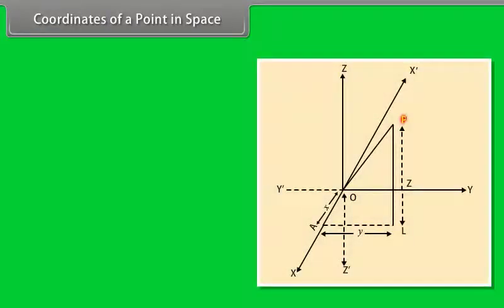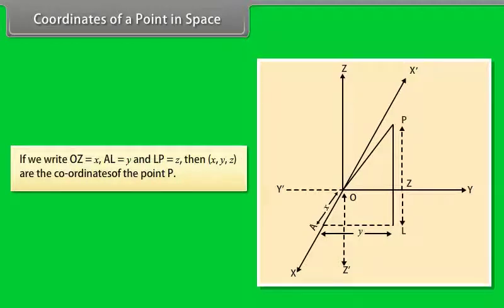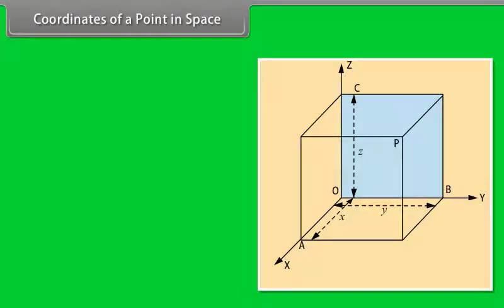Coordinates of a point in space. Let P be any point in space. Through P, draw perpendicular PL on the XY-plane meeting this plane at L. Through L, draw a line LA parallel to OY cutting OX in A. If we write OA = x, AL = y and LP = z, then x, y, z are the coordinates of the point P.